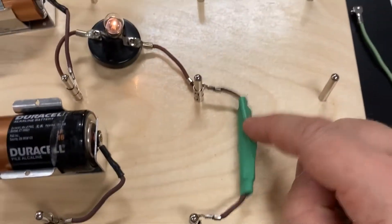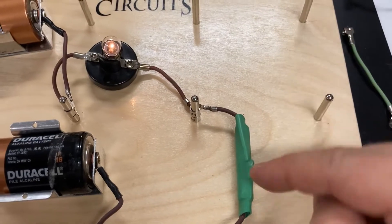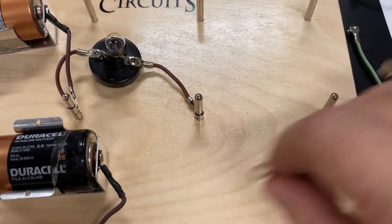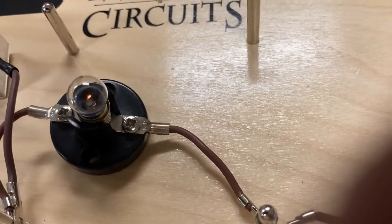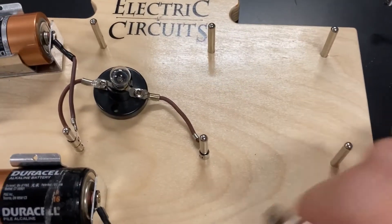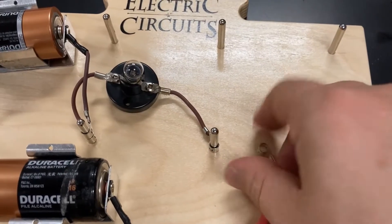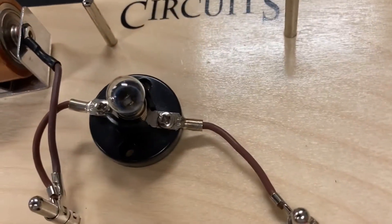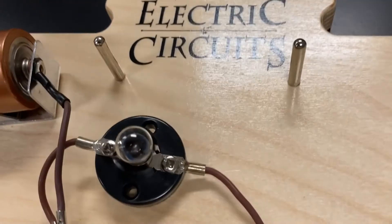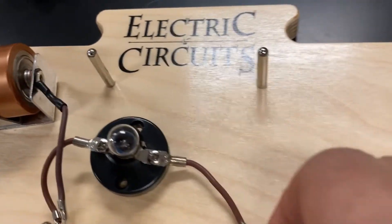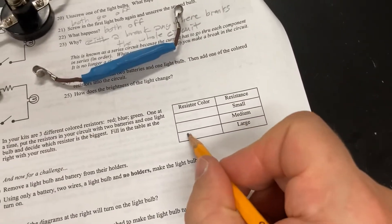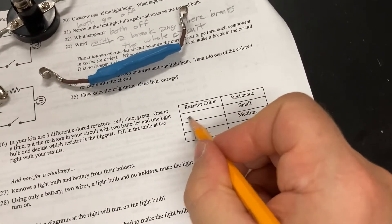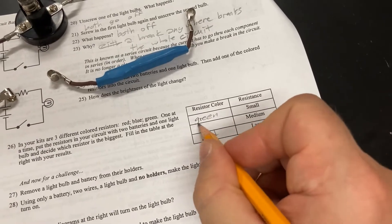So, green is the least resisting. It's letting current through. The blue one lets some current through. And the red one doesn't seem to let enough in that we can even see it. There's current going through. But it's not enough for us to see. Okay? So, now let's write that down. Fill in the table at the right. Which one is the biggest resistor? The red. Smallest resistor? Green. And then the blue one was a medium.